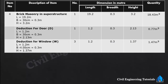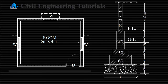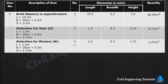Deduction for windows: window size is 1.2 meter by 1.37 meter. We have 3 windows. Length = 1.2 m, width = 0.3 m (same as wall width), height = 1.37 m. Total quantity = 3 × 1.2 × 0.3 × 1.37 = 1.47 cubic meter.